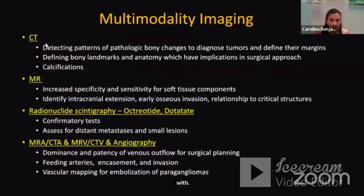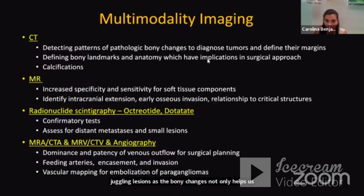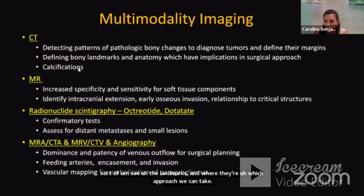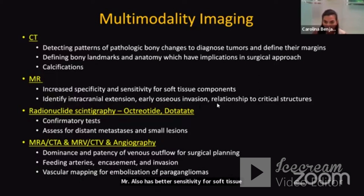CT is particularly useful when talking about jugular foramen lesions, as bony changes not only help with the diagnosis of tumors but also allow us to see the landmarks and determine which approach we can take. Calcifications within tumors may also lead us in one direction or another for diagnosis. MRI has better sensitivity for soft tissue components and allows us to identify where tumors are extending and their relationship to critical structures, including the vascular chart.